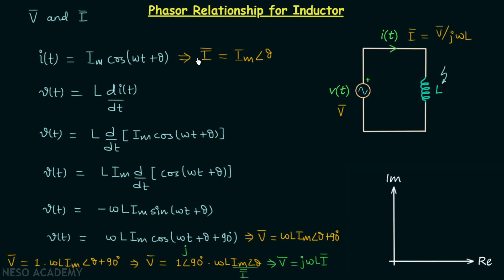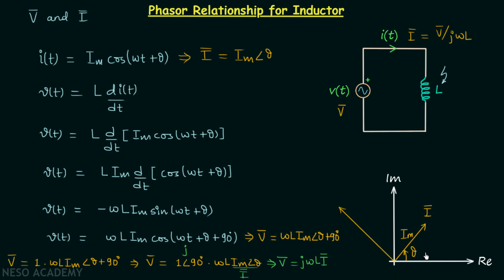The current phasor has magnitude Im and makes an angle θ, so we will have I phasor plotted at angle θ with magnitude Im. For the voltage phasor, it has magnitude ωL·Im and angle θ + 90°, so V phasor is plotted at angle θ + 90° with magnitude ωL·Im.